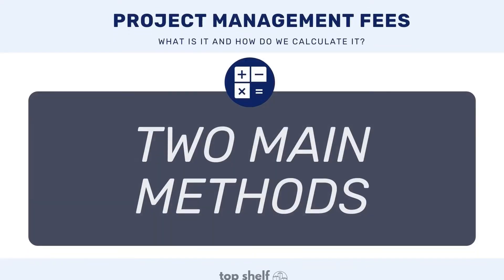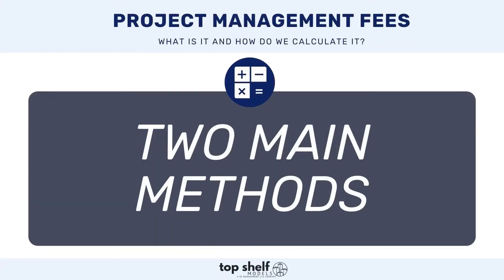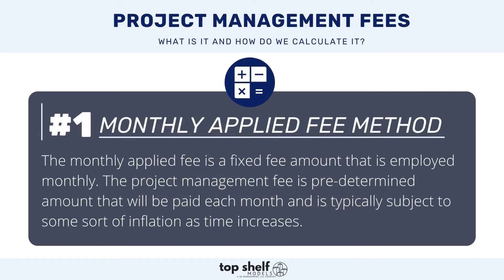There are two primary ways to calculate project management fees. One method is a monthly applied fee method and the other is a percentage of revenue method. The monthly applied fee is a fixed fee amount that is employed monthly — a predetermined amount paid each month, typically subject to some sort of inflation as time increases. In an underwriting scenario, you would have a monthly input where you can enter the monthly project management fee, say $250 every month, which flows through the cash flow each month when operations begin.